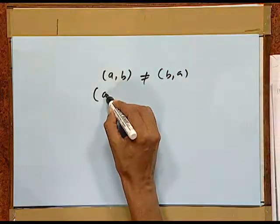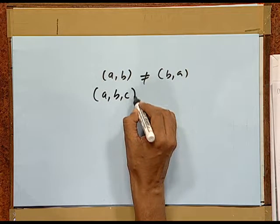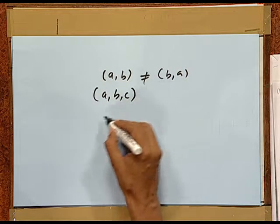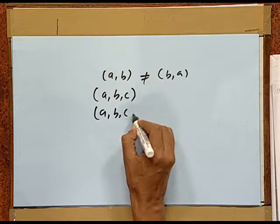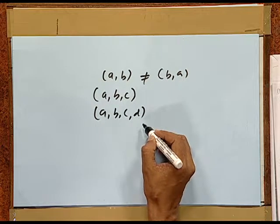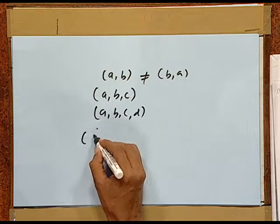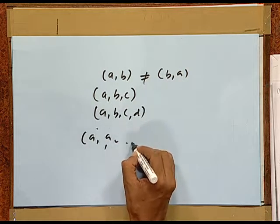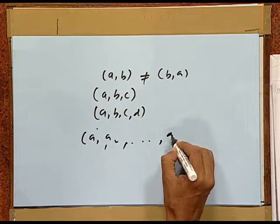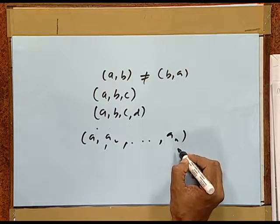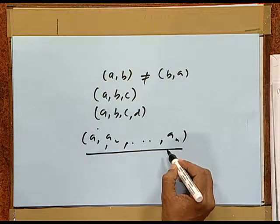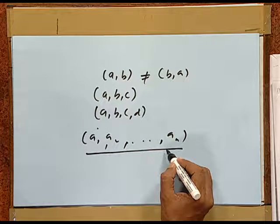Similarly, this is an ordered triple. We can have an ordered quadruple. In this manner, we can have n terms like this which we call an ordered n-tuple. This can also be called a sequence of n elements: a₁, a₂, and so on up to aₙ.